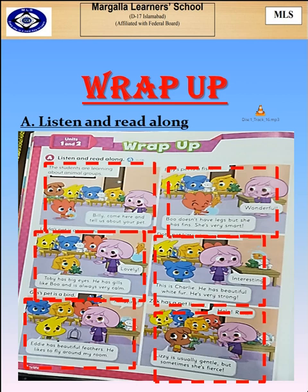Dot's pet kitten is a mammal. This is Charlie. He has beautiful white fur. He's very strong.